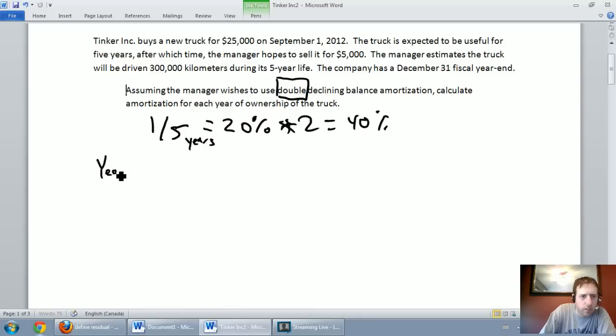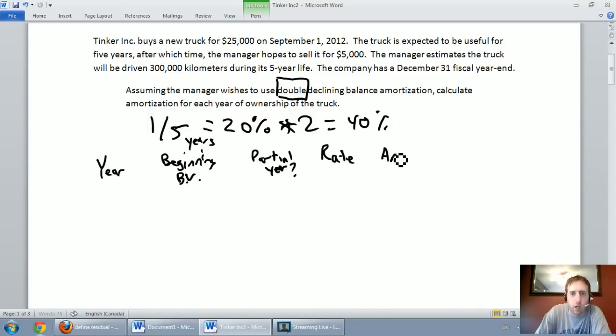Let's make our table. We'll put year on the left, then beginning BV - book value of our assets. I'll put a column here for partial year, just for the first year really. If I have a partial year, I want to put the number of months down. Then the rate, which we calculated as 40%, our amortization expense, and our ending BV or ending book value of our assets. We're going to fill out this table for all five years of this asset's useful life starting in 2012.